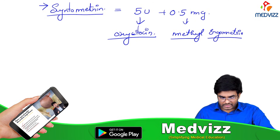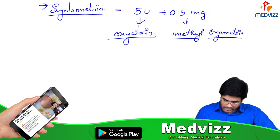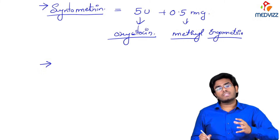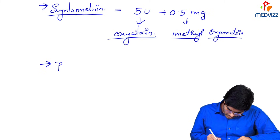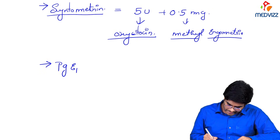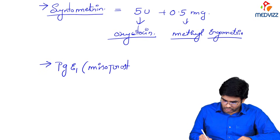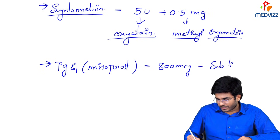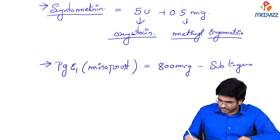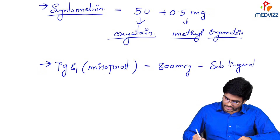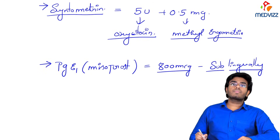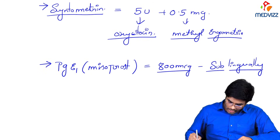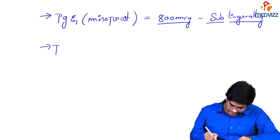Other than syntometrin, we can also use prostaglandins, which cause uterine contraction. Prostaglandin E1 is known as misoprostol. Misoprostol — 800 micrograms sublingual can be given.